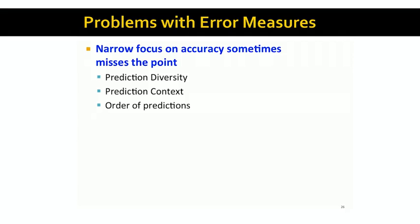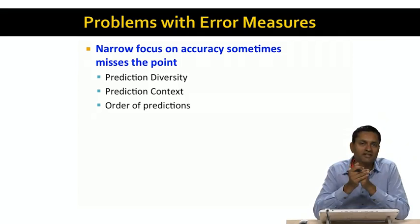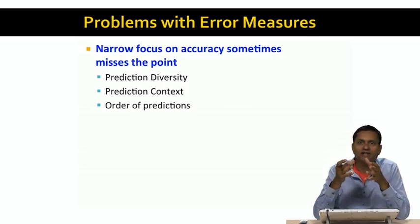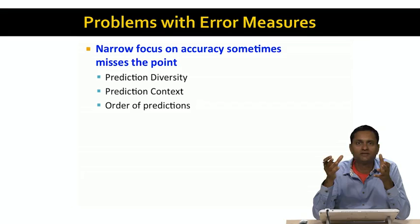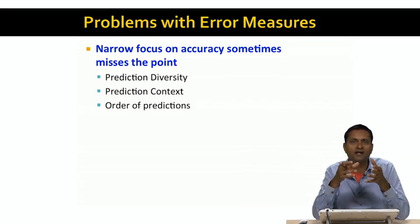The first problem we run into is a problem of prediction diversity, which means that all the predictions are too similar to each other. For example, let's say the user liked the first Harry Potter movie. Now, the set of most similar items to that, or the set of items with the best scores, might be the other Harry Potter movies. So, all the predictions might therefore be Harry Potter movies, which is a non-diverse set of recommendations, and might not introduce the user to any new and interesting items.